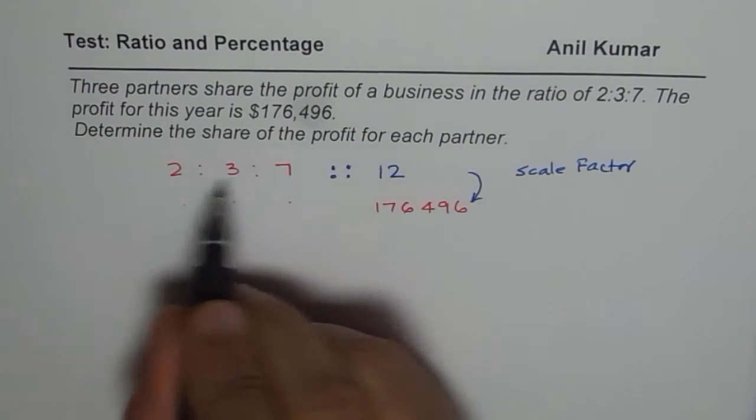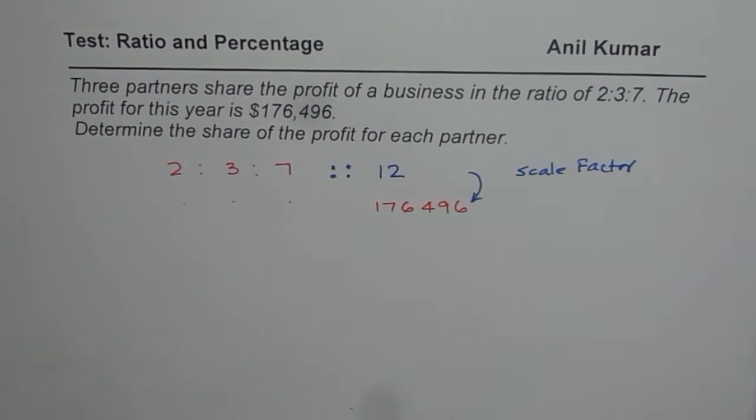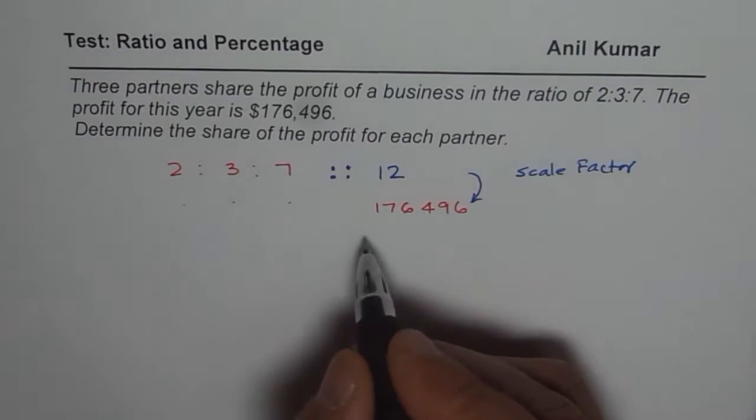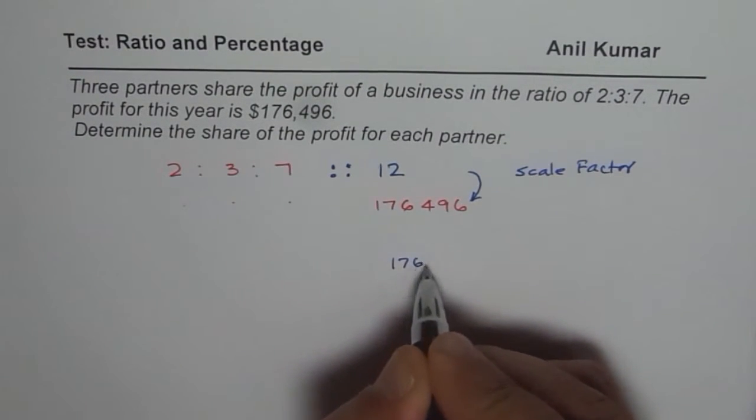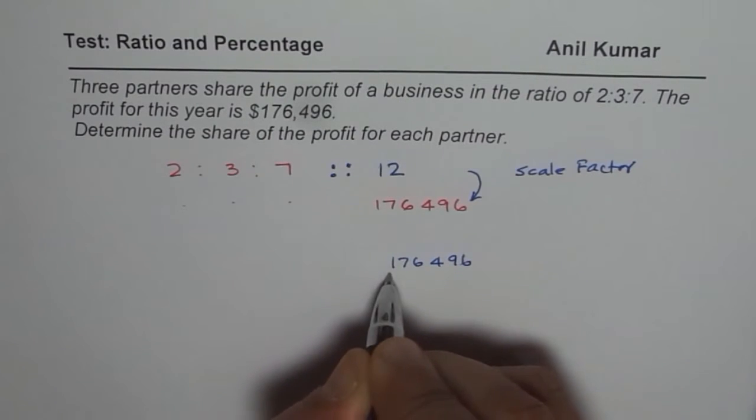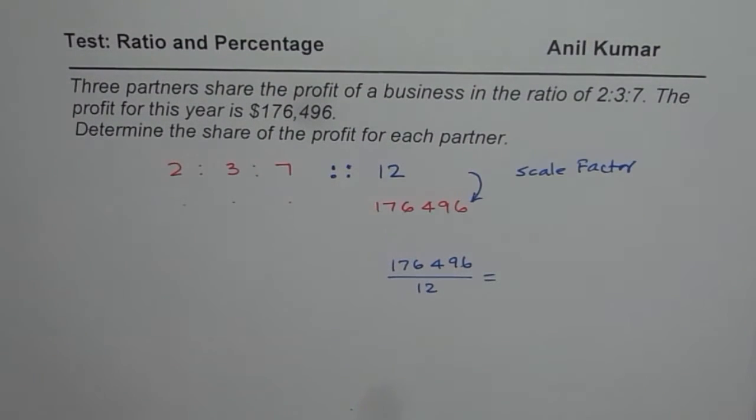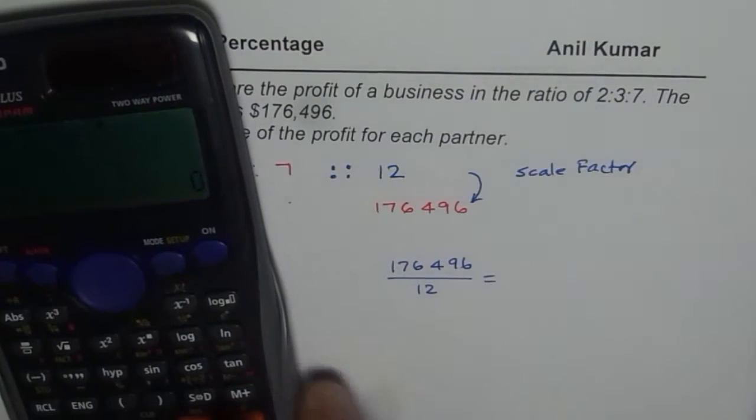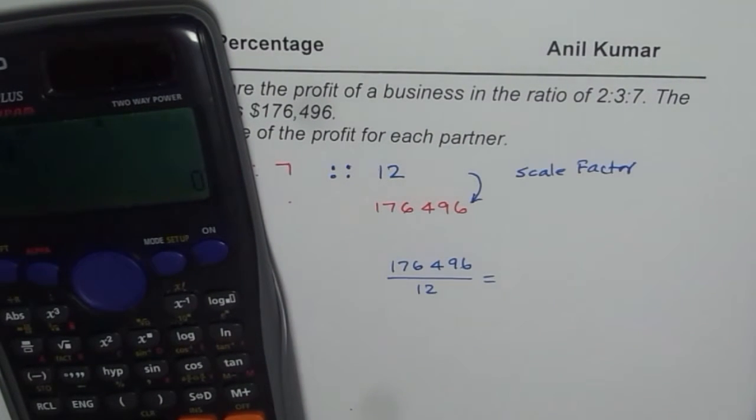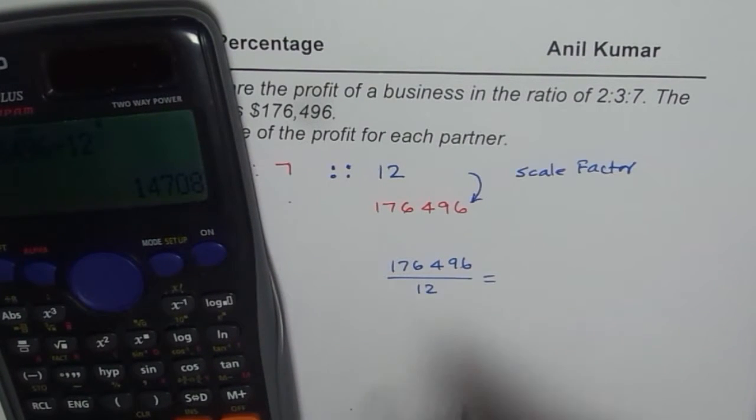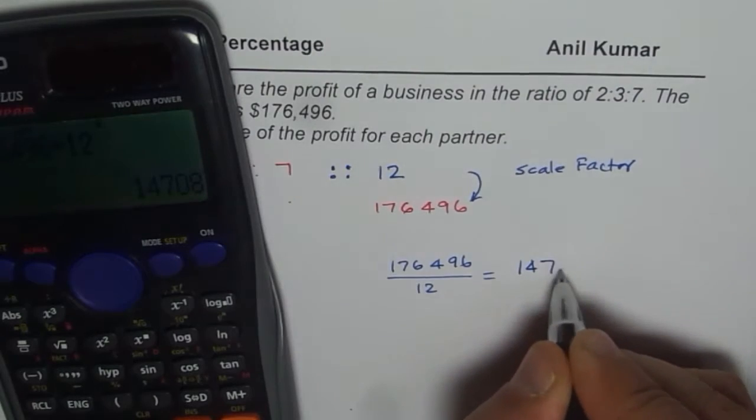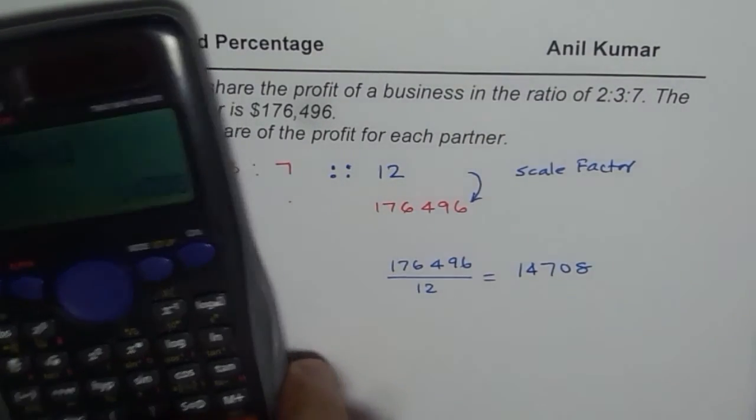So, add this up and get the total. Now, to find the scale factor, we need to divide 176,496 by 12. So, let us find how much is the scale factor. So, let us do it using the calculator, 176,496 divided by 12 equals to, the value is 14708. So, that is the value which we have.